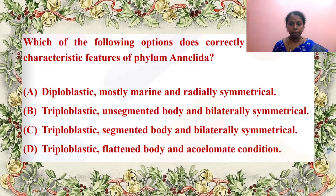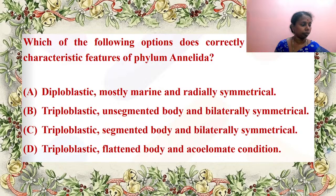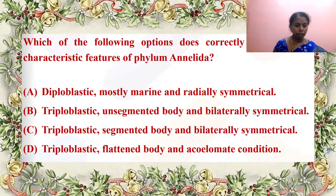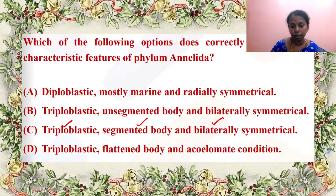Which of the following options correctly represents the characteristic features of phylum Annelida? It is triploblastic, segmented, and bilaterally symmetrical — that is the characteristic feature. Excellent answer by Tarunika, Anuva, Jeeva, and score more.